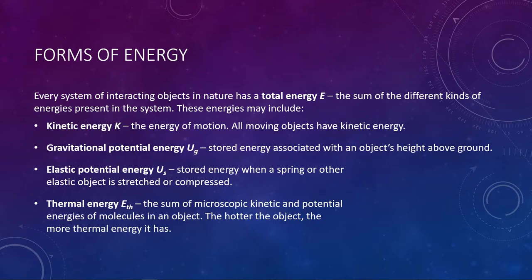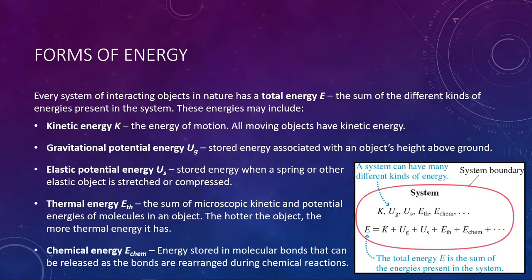Those are our four main types of energy. There is a fifth one I'll just mention because we will talk about it in passing, but it does not show up in our math — and that is chemical energy, E subscript chem. This is the stored energy in molecular bonds that is released during chemical reactions. It goes beyond the scope of our Physics 1 lecturing, but we'll get to more on that soon.